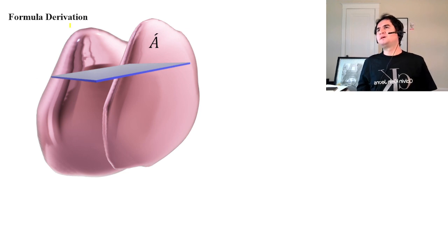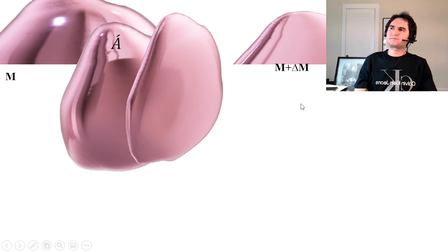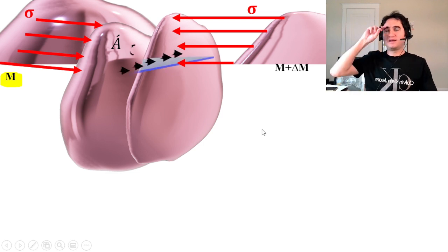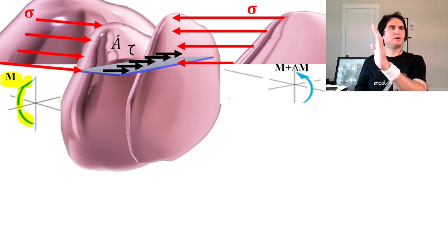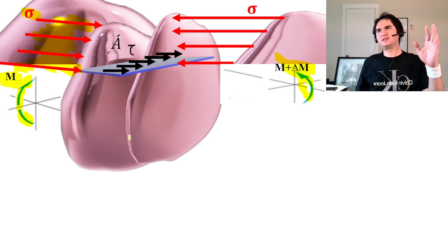Let's derive the formula for shear. Consider an element of length dx with a bending moment applied at both sides. At the left face we have moment M, producing bending stresses, and at the right face we have M plus dM over the travel distance dx.